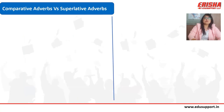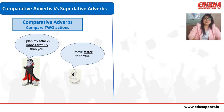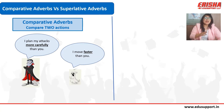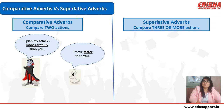For adverbs: comparative adverbs are used to compare two actions. For example, 'I plan my attacks more carefully than you' compares how I plan versus how you plan — only two. 'I move faster than you' compares two movements. So we use 'faster' and 'more carefully' for two.